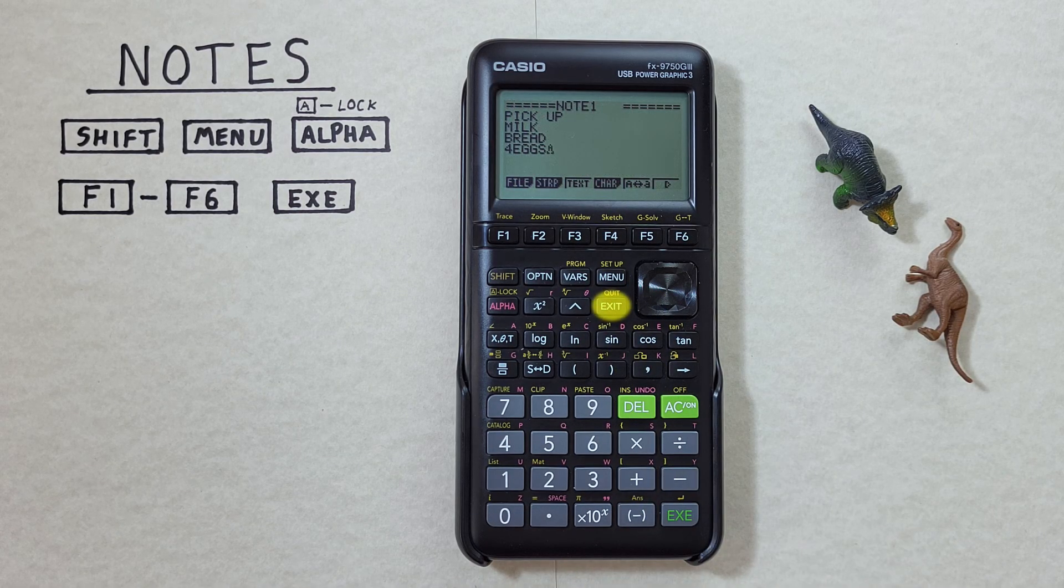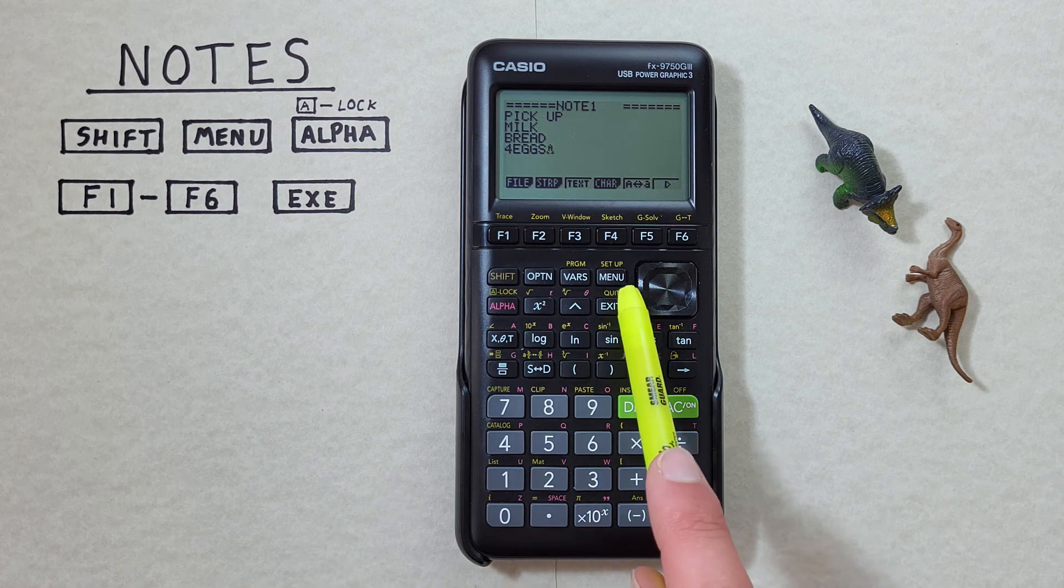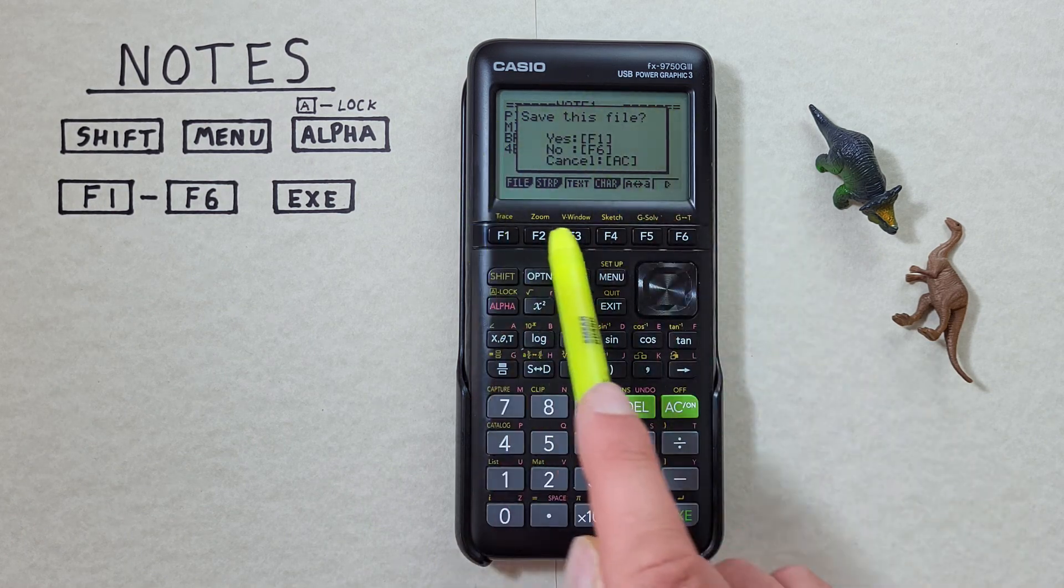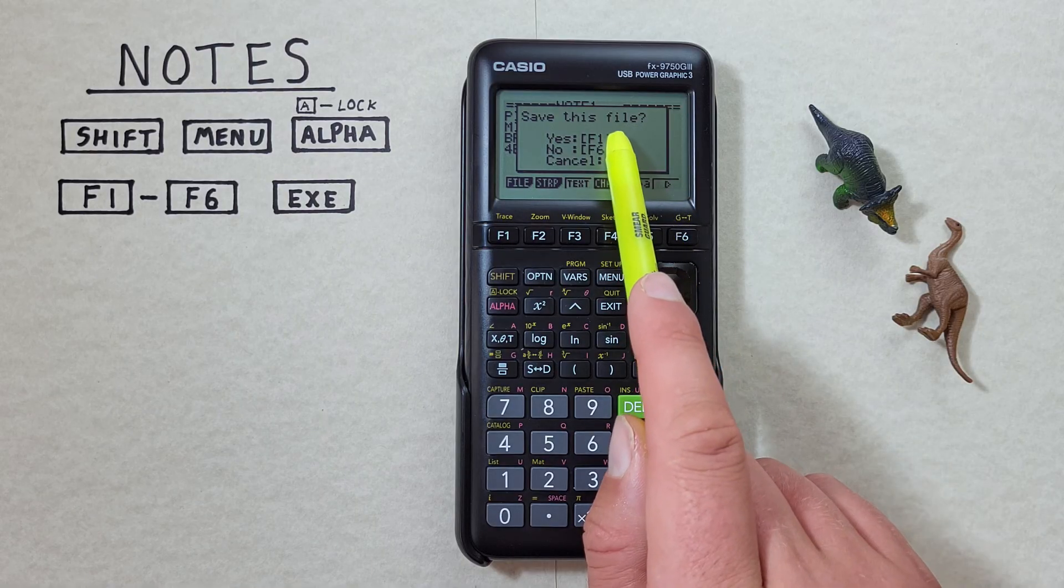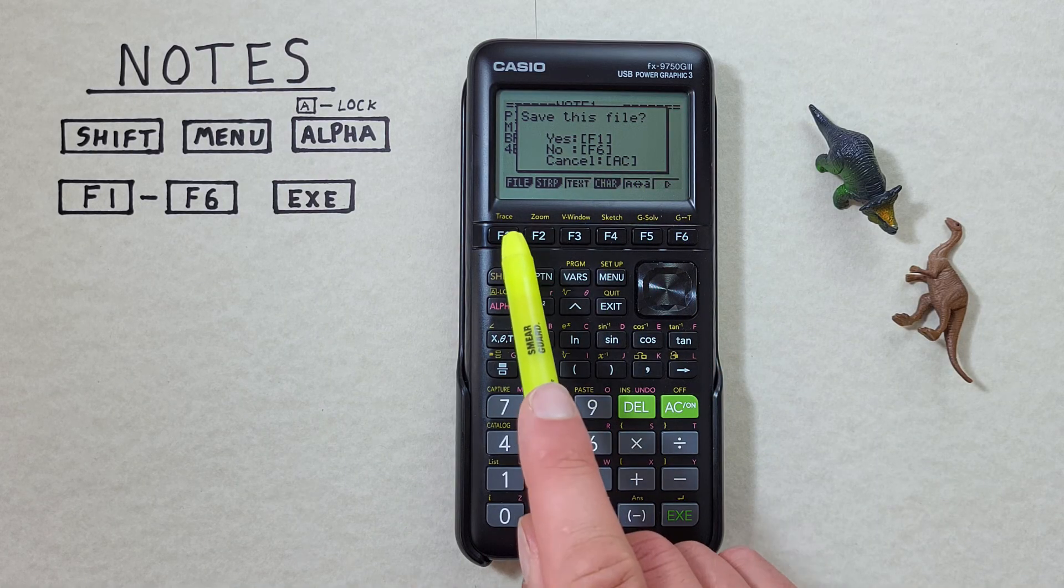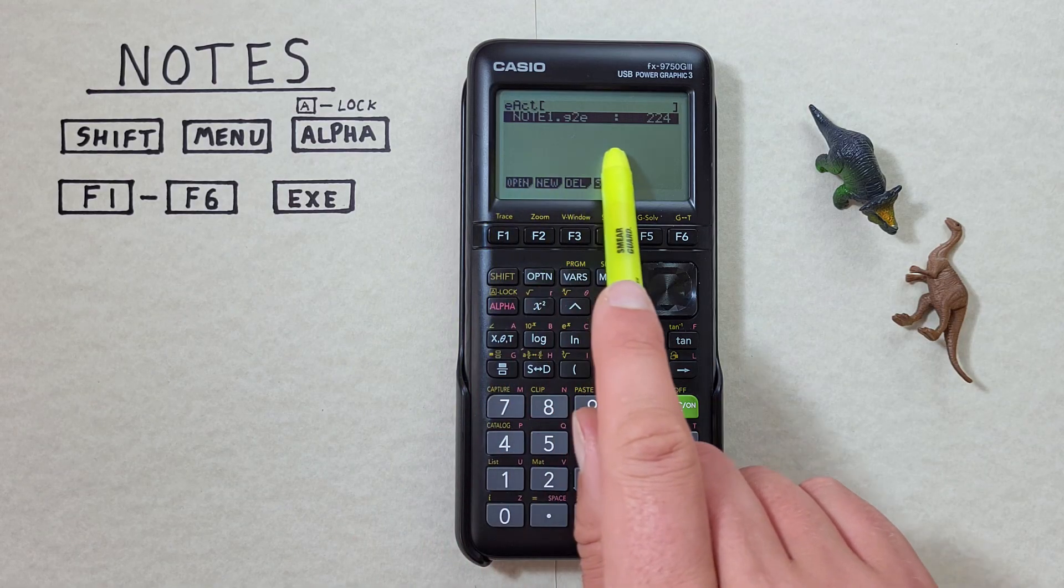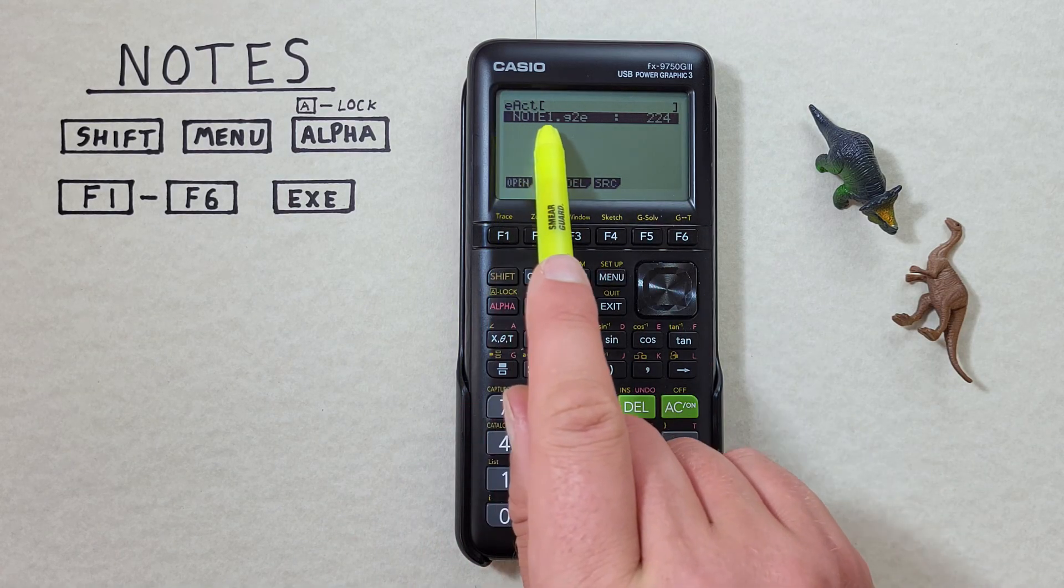Once we're done entering our note we hit the exit key. That'll bring us to this screen here asking us if we want to save our file. We do. So we want to press F1. And we're back here to our main screen. And we see note one has been saved.